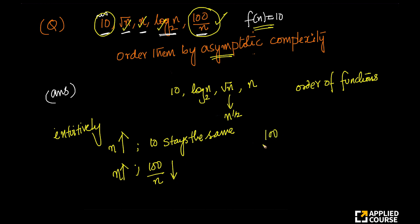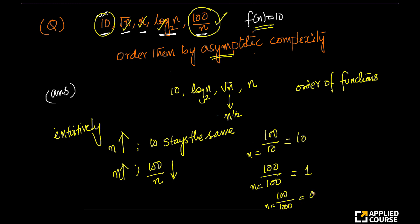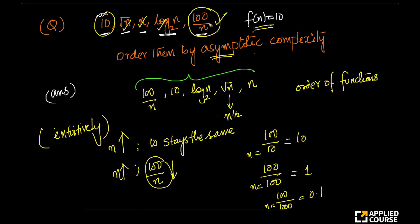Look at it this way: 100 by 10 is 10 — here n equals 10. When n equals 100, 100 by 100 is 1. When n equals 1000, 100 by n becomes 0.1. So as n increases, 100 by n is reducing, which means a constant — which does not grow at all — is going to grow faster than 100 by n. So this is the correct order: 100/n, constant, log n, √n, n.